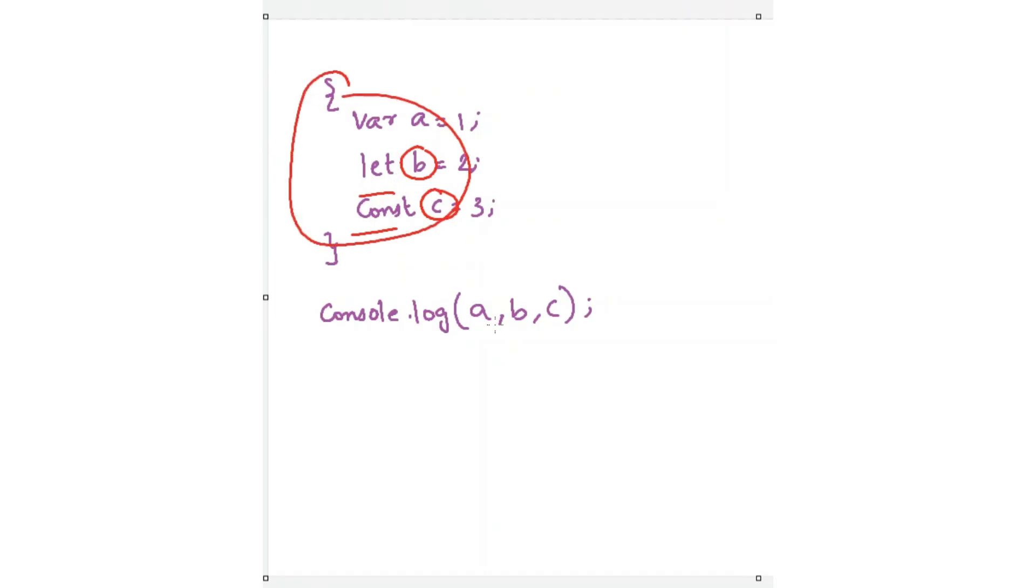Due to this reason, when we try to access b and c outside this particular block, it will throw a reference error saying that b and c are not defined because they are defined inside this block. So we cannot access this outside this particular block.